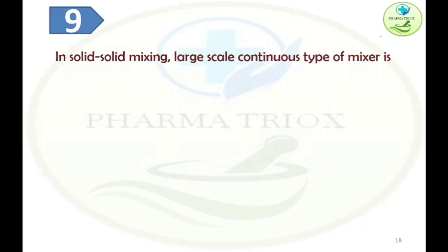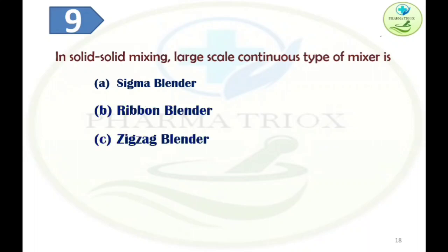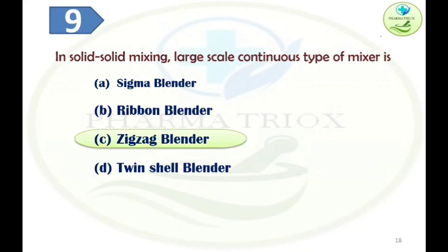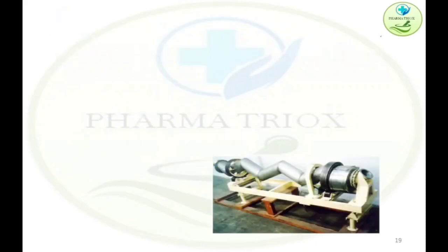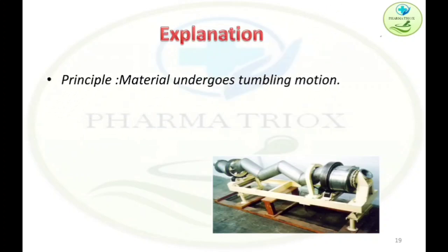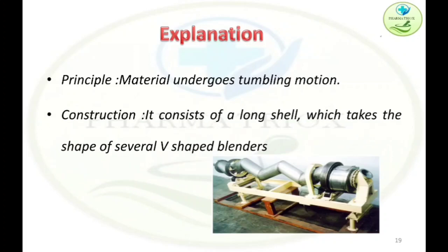Question nine: In solid-solid mixing, the large-scale continuous type of mixer is — Option A: Sigma Blender, Option B: Ribbon Blender, Option C: Zigzag Blender, Option D: Twin Shell Blender. The answer is Option C — Zigzag Blender. The principle is that material undergoes tumbling motion. Its construction consists of a long shell that takes the shape of several V-shaped web blenders, as seen in the diagram.